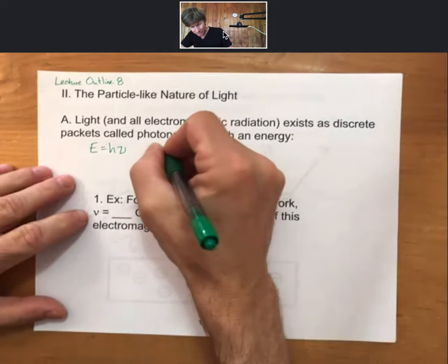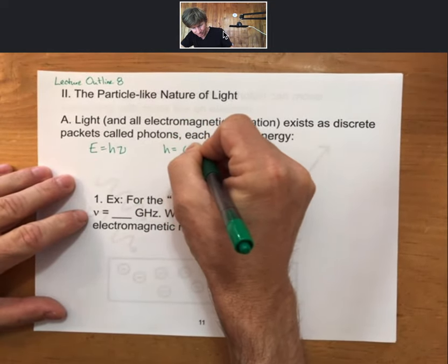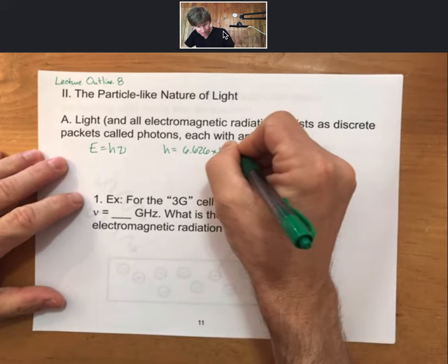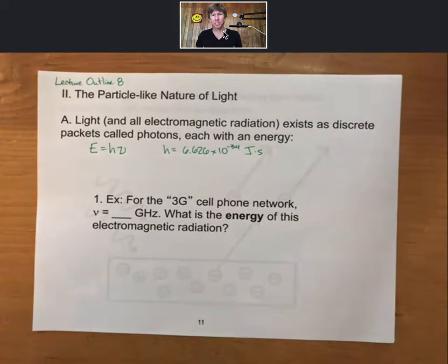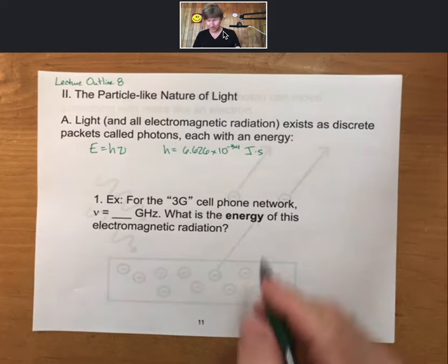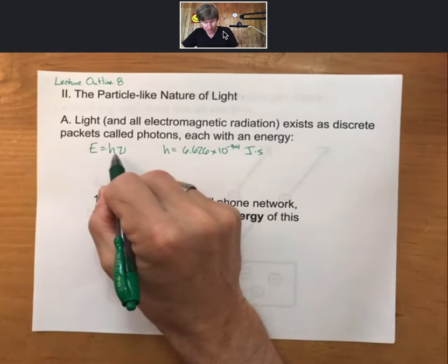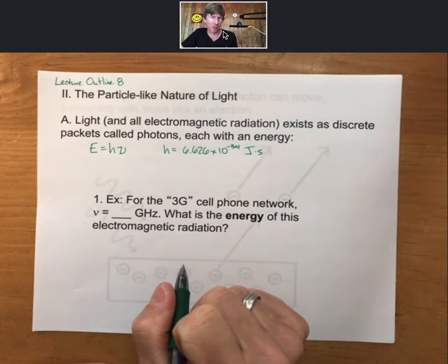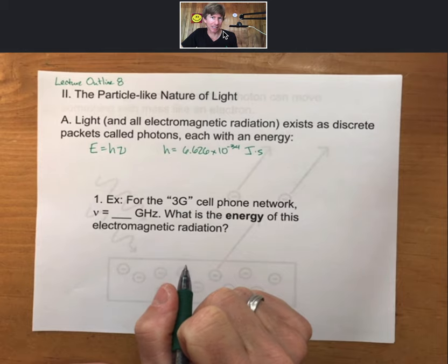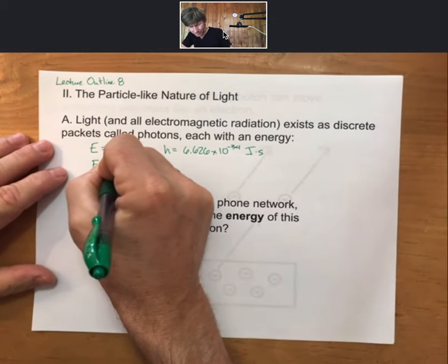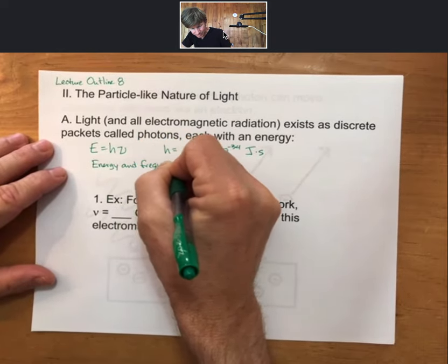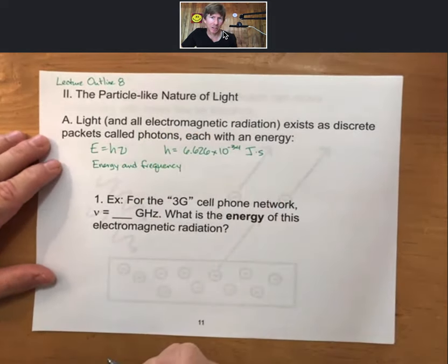And H is 6.626 times 10 to the negative 34 joule seconds. And therefore, from this equation, energy and frequency are directly proportional and related by the constant Planck's constant, H. Energy and frequency are directly proportional.